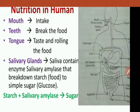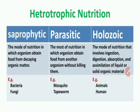Holozoic mode of nutrition involves ingestion, digestion, absorption, and assimilation. Examples are animals and human beings. Ingestion means taking food into the mouth. Digestion breaks down the food. Useful materials like carbohydrates, fat, and protein are absorbed — this is absorption. And waste materials are expelled — this is assimilation.